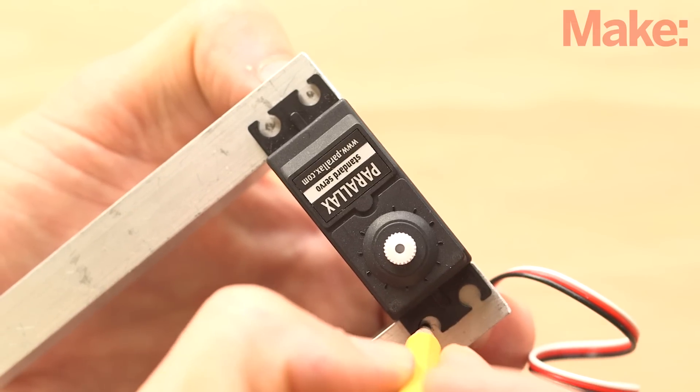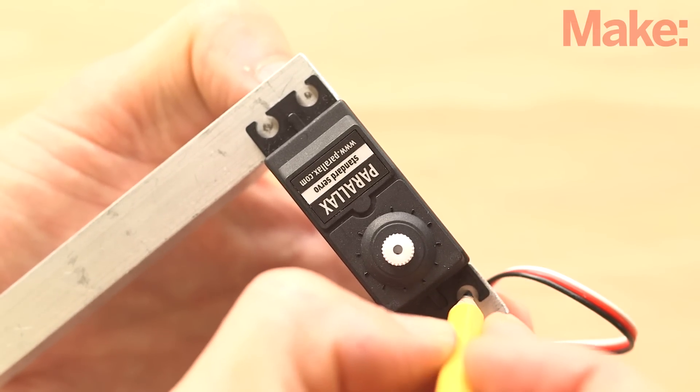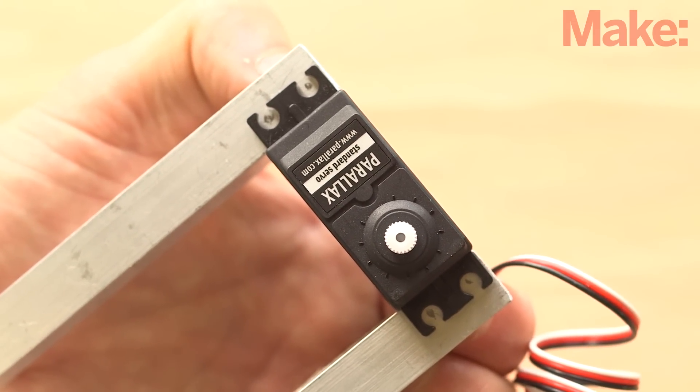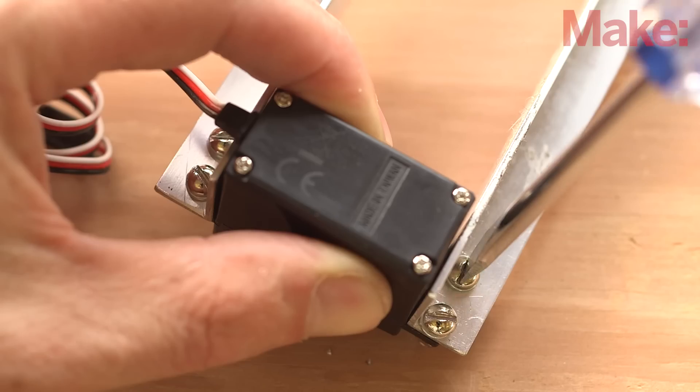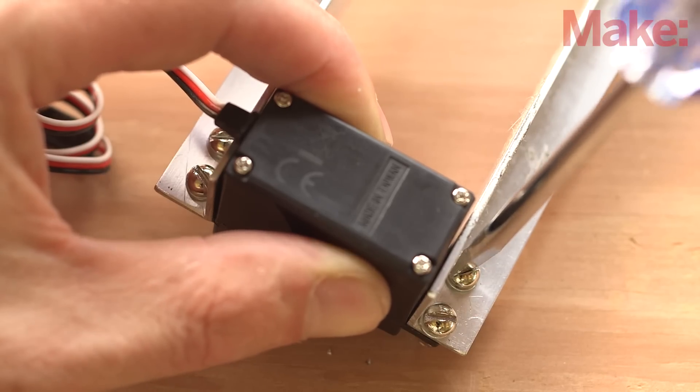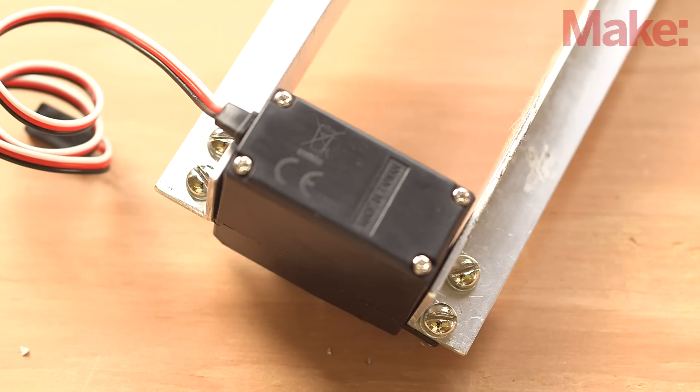Now, position one of your servos across the rails, flush with the ends, and mark the servo case mounting holes to the rails. Center punch where marked and drill the required holes. Mount the servo to the rails using four machine screws with split washers and hex nuts. This will be the lower or elbow joint of the drawing arm.